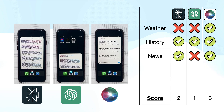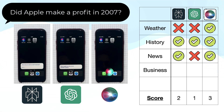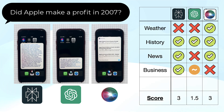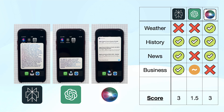Next, let's look at the category of business: Did Apple make a profit in 2007? We see that Perplexity gives us the full answer including a number, whereas ChatGPT answers correctly but without numbers, and Siri fails to answer and just gives us a link to an internet search. So full point for Perplexity and half point for ChatGPT here.